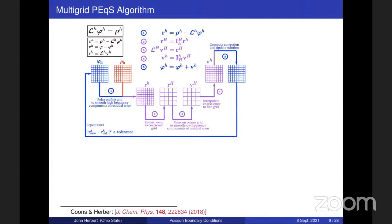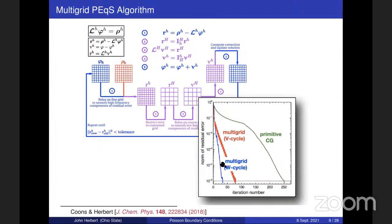We've implemented this with a multi-grid solver, but it's fairly standard numerical machinery. Just to show you, this multi-grid version - where you move up and down between finer and coarser grids - converges in two different variants shown in red and blue, but converges much, much faster than a primitive single-grid conjugate gradient solver. So we can solve this generalized Poisson equation efficiently.